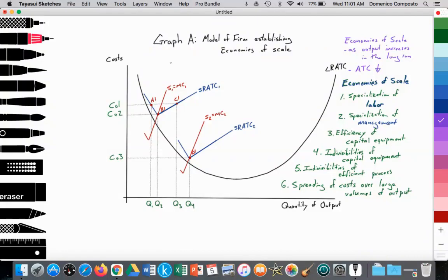Our example is a coffee shop. This coffee shop will be illustrated moving from the short run to the long run, back into the short run over time to achieve economies of scale. On the x-axis, we're measuring the quantity of output, and on the y-axis, we're focusing on the costs of production. This firm starts at point A1 with a quantity of output at Q1 and costs on average at CO1.